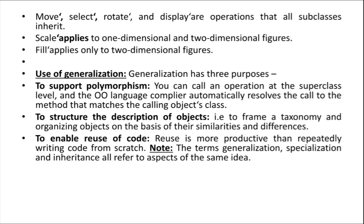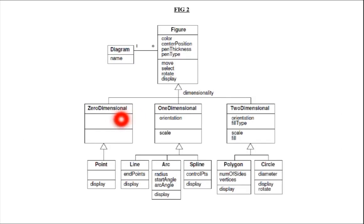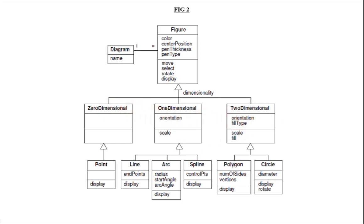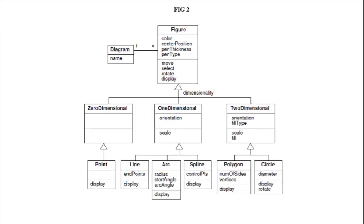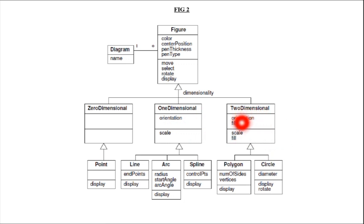Scaling applies to one-dimensional and two-dimensional figures, but scaling does not apply to zero-dimensional figures. So the scaling operation is present only in one-dimensional and two-dimensional figures. Fill applies only to two-dimensional figures — for example, you can fill color for a circle. For a line, which is a one-dimensional figure, you cannot fill color. For circle, rectangle, polygon, and triangle — all two-dimensional objects — you can fill color.